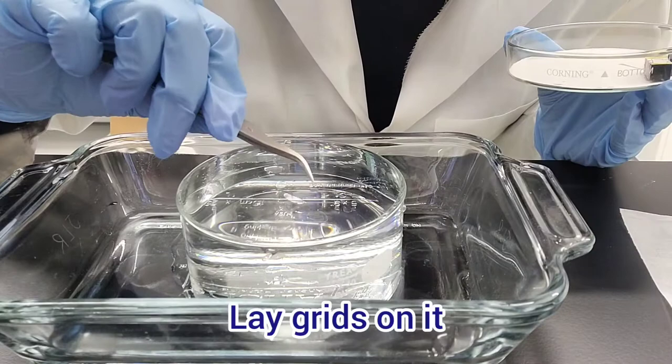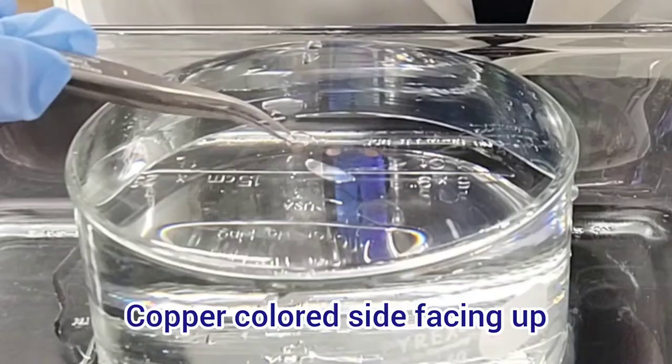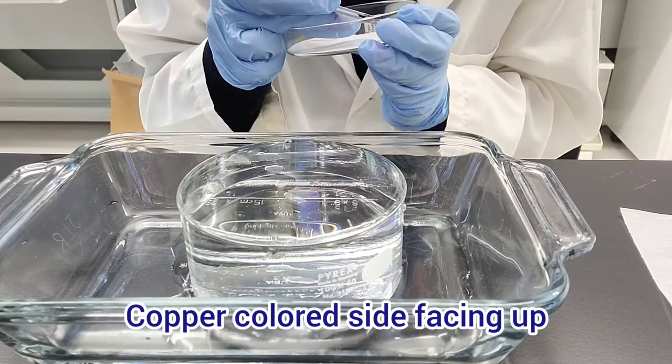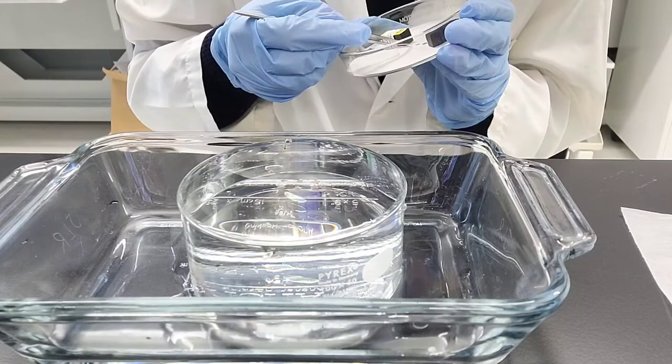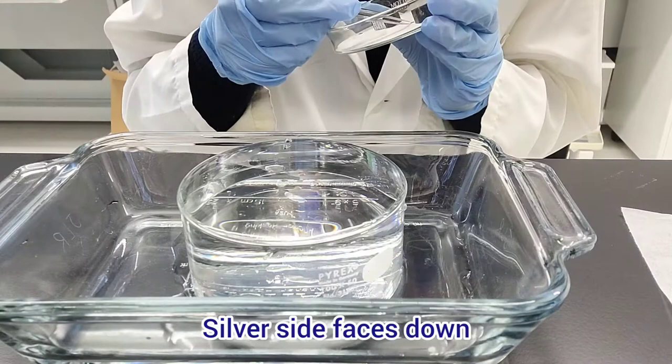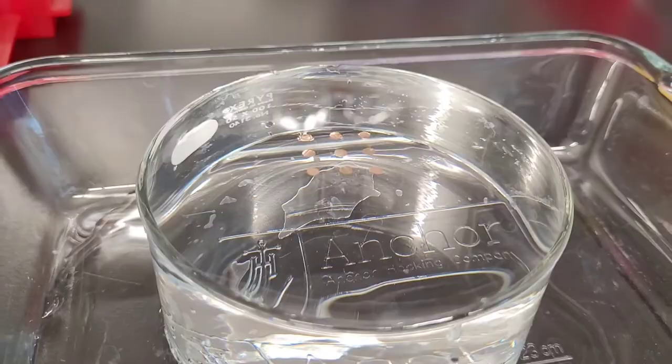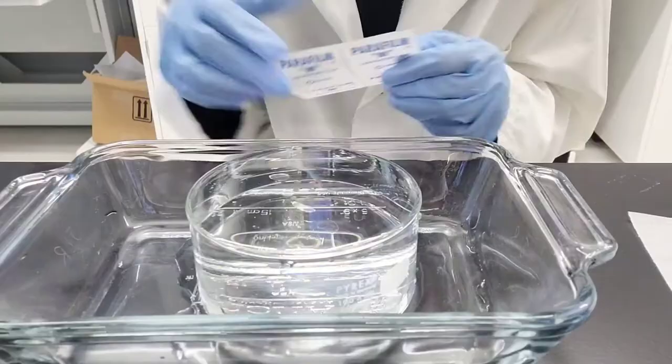Then, with the copper-colored side of the grids facing up, you are going to lay out your grids on the surface. It's good to do it in a regular pattern, like a three by three kind of box. The point here is just to remember that the silver side should be facing down and the copper side should be facing up, because when you put the parafilm on later, you will be able to see the silver side, and that's the side that will get coated with carbon.